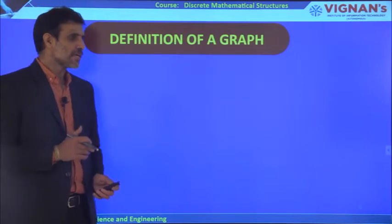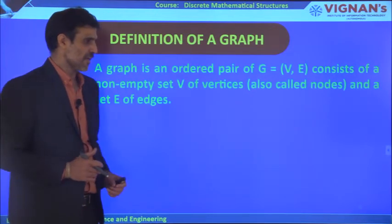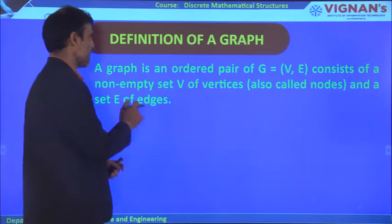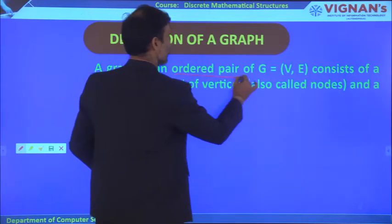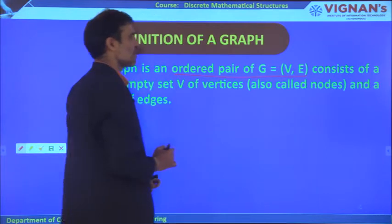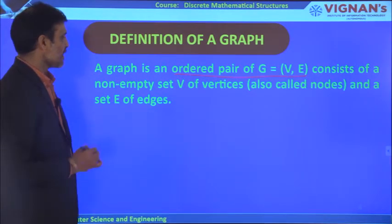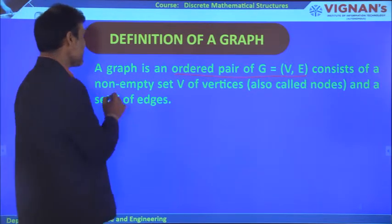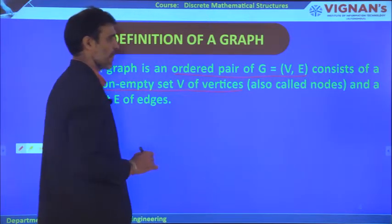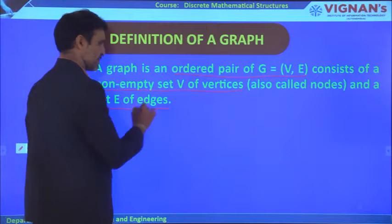Now coming to the definition of a graph. A graph is defined as an ordered pair G = (V, E), where V is a non-empty set of vertices and E is a set of edges.